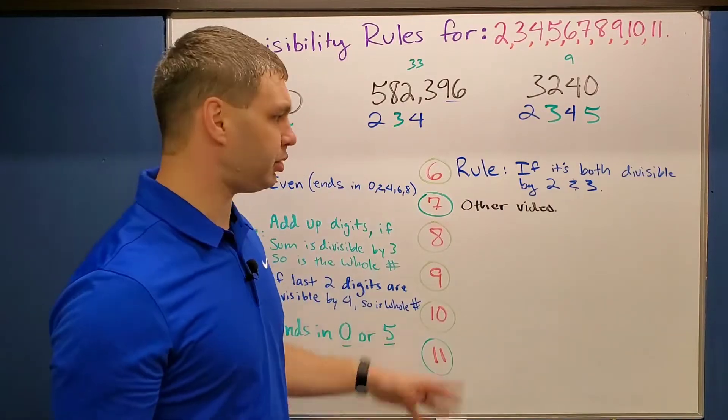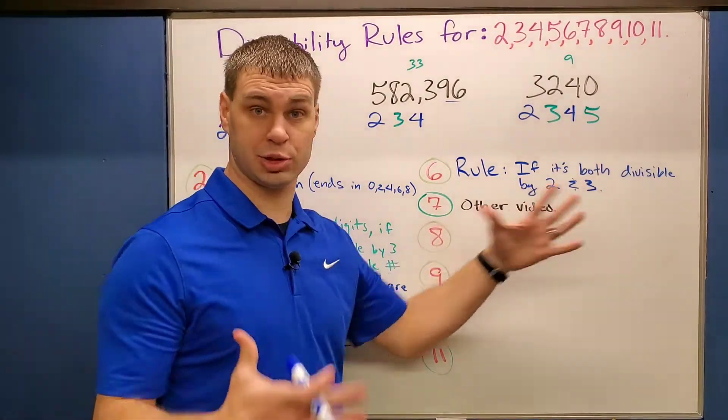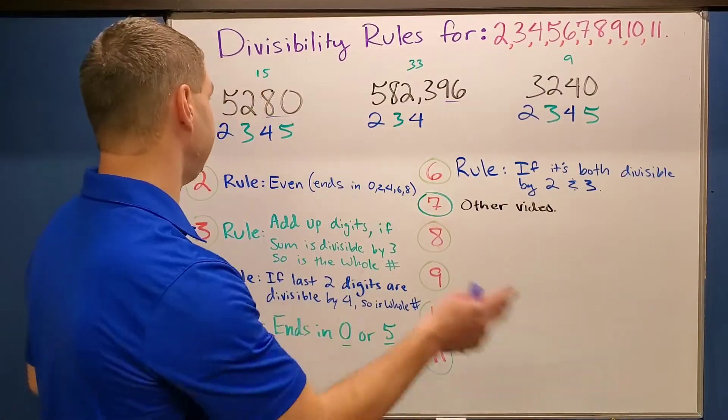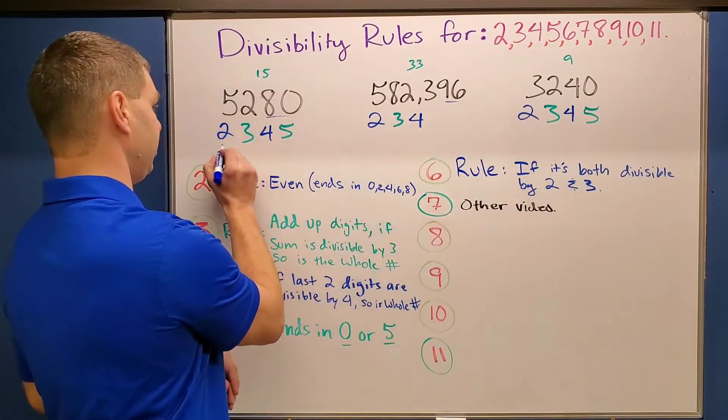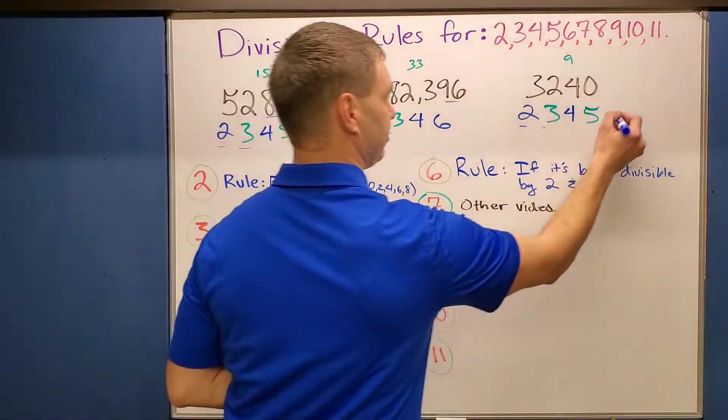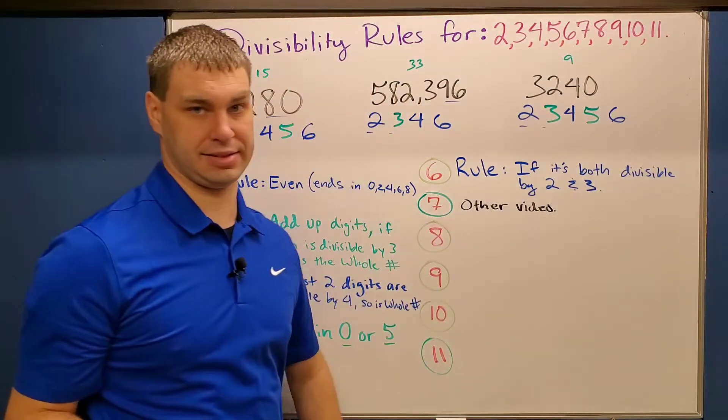The divisibility check for six is really simple. If it's both divisible by two and three, which we already checked, then it's also going to be divisible by six. And you can see that all three of our numbers here were both divisible by two and three, so we can also say that they all are divisible by six.